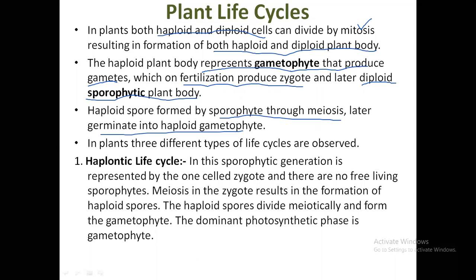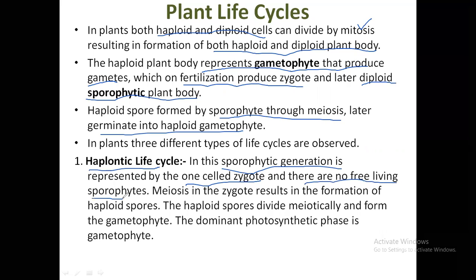The first one is the haplontic life cycle. In this, the sporophytic generation is represented by only one cell — the zygote — and there is no free-living sporophyte. The sporophytic phase is very limited in their life cycle, confined to just the single-celled zygote, with no separate plant body for the sporophytic stage.